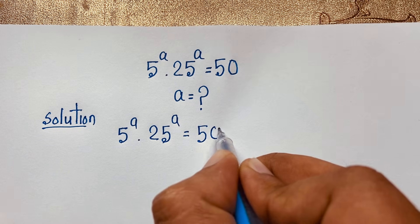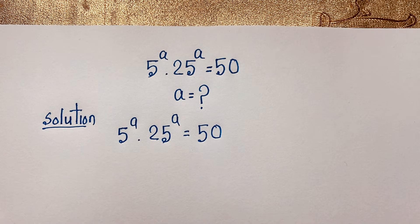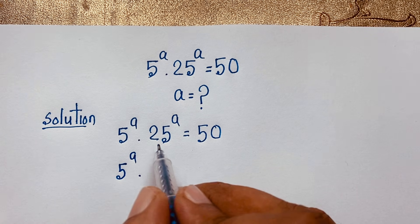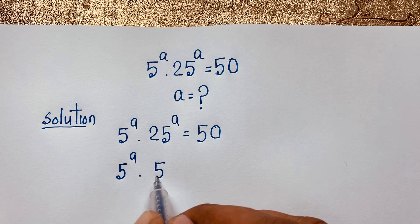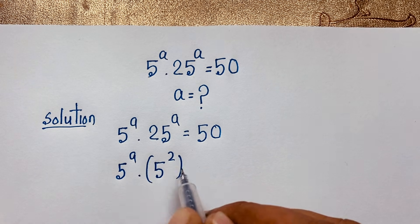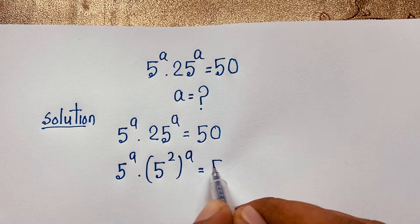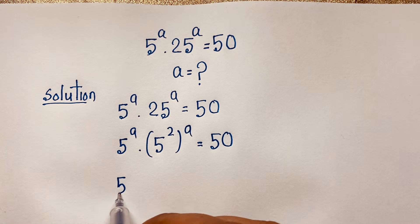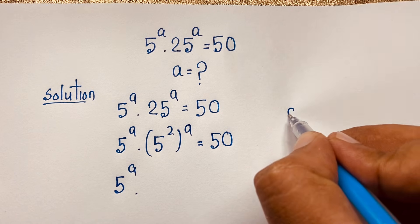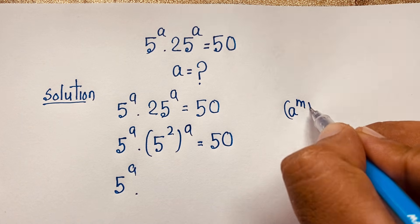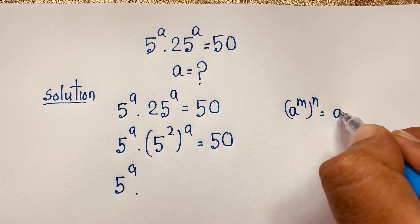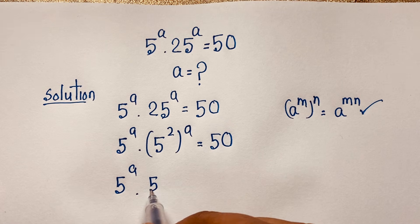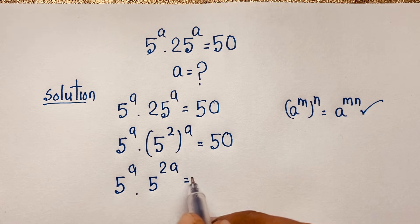This is our question. First of all, we have 5 to the power a, times 25. Now 25 can be written as 5 to the power 2, in brackets, to the power a, is equal to 50. Now according to the exponential formula — a to the power m, whole to the power n, equals a to the power m×n — if I apply this formula here, it will be 5 to the power 2a, is equal to 50.